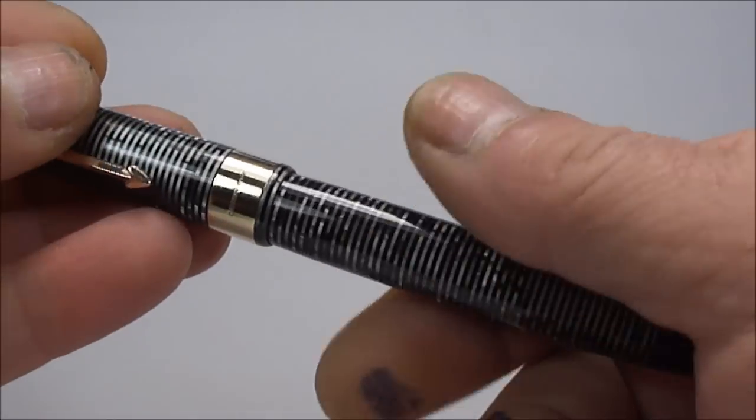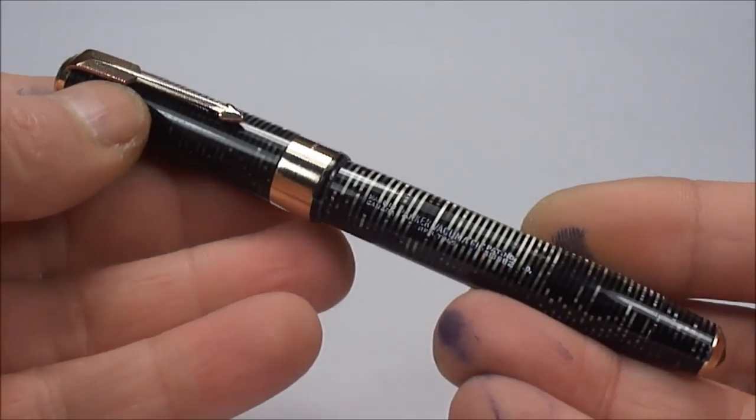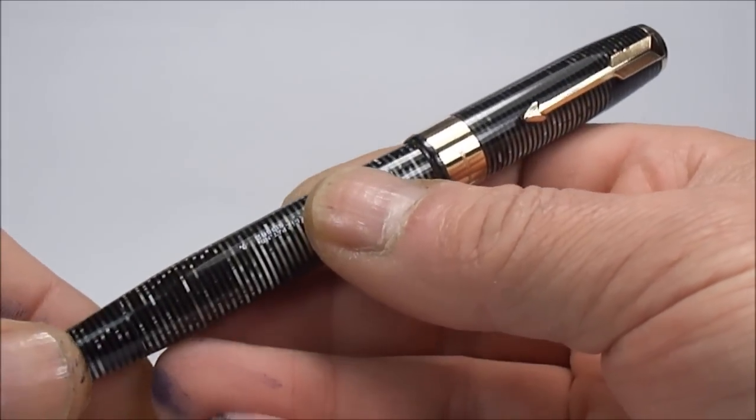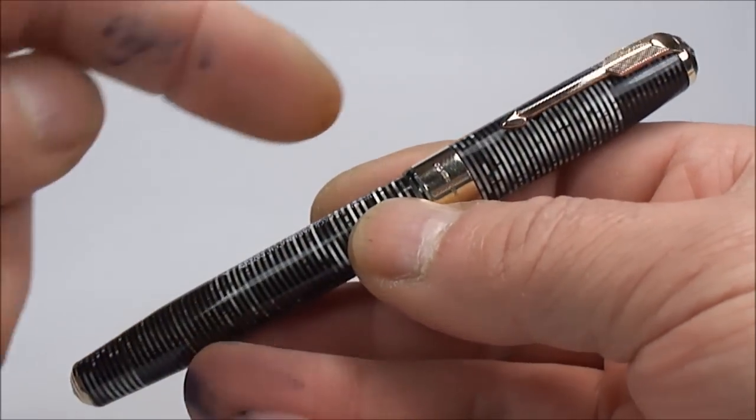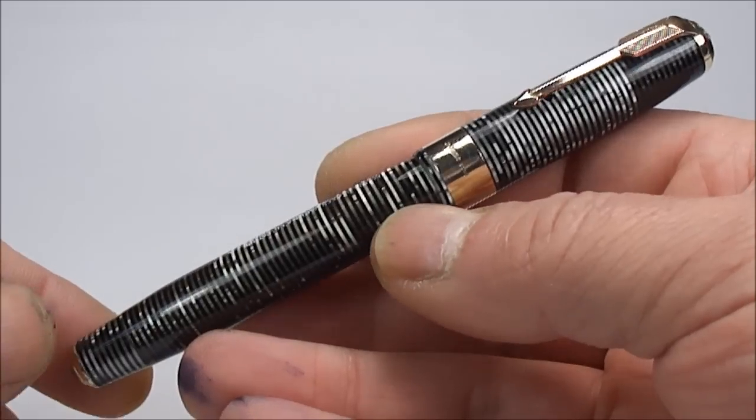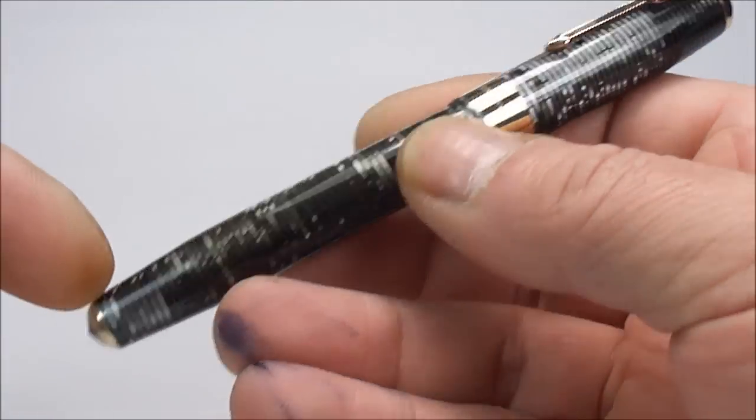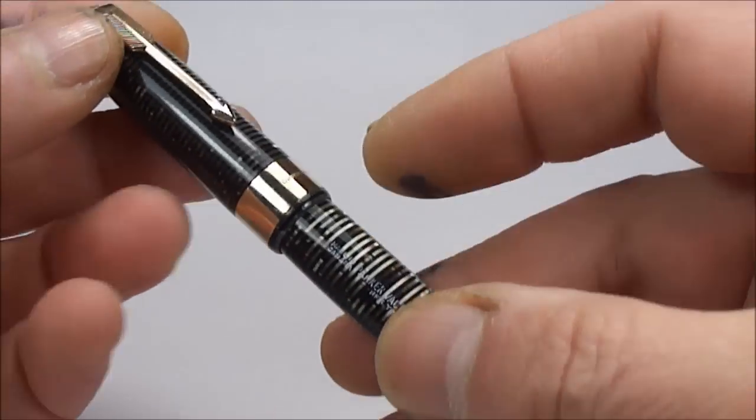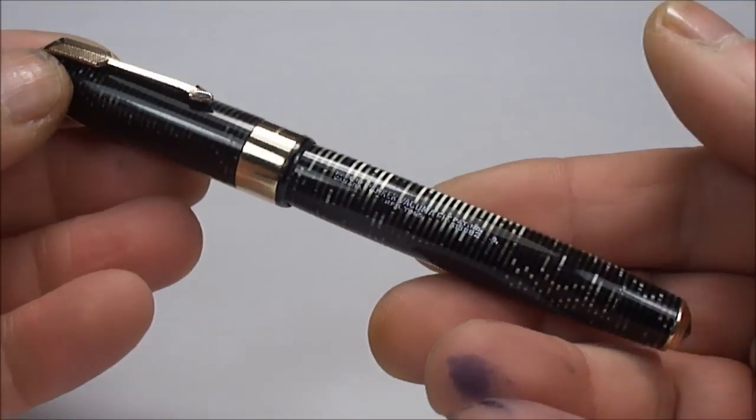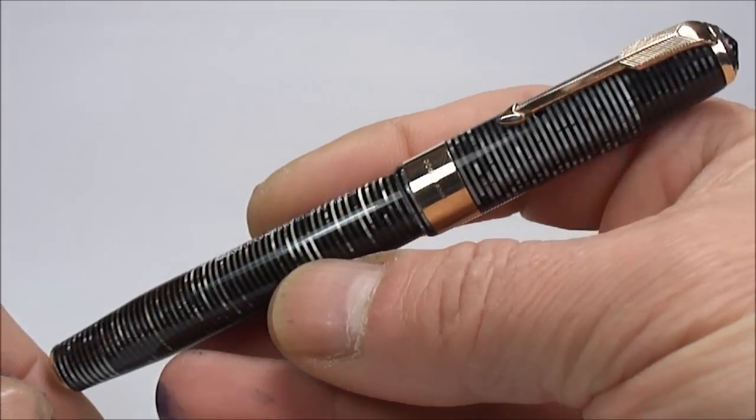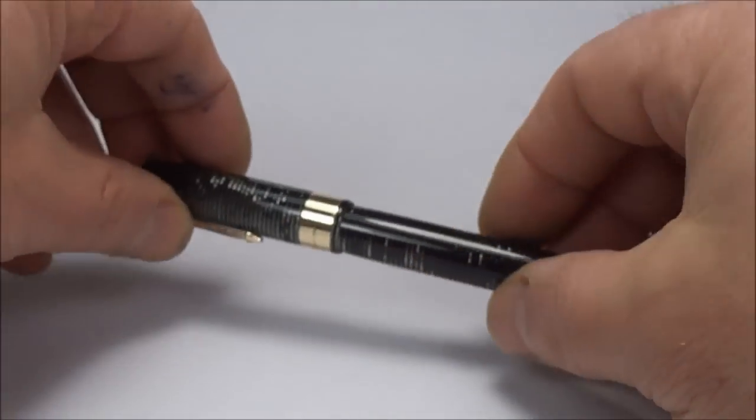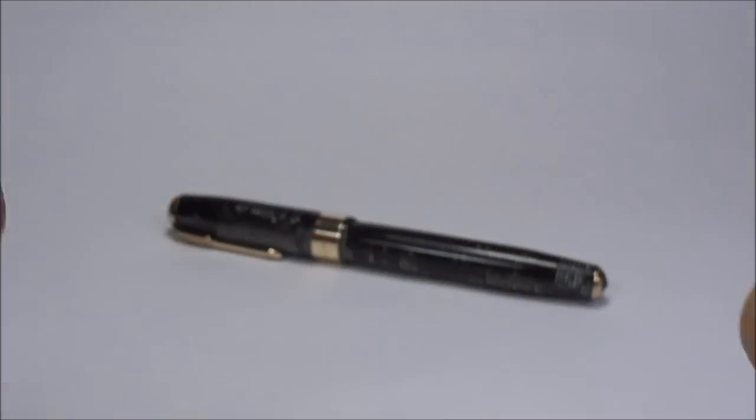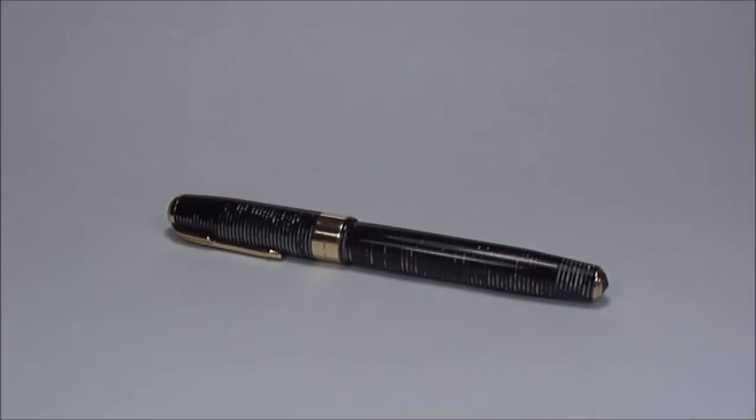Let's put the cap back on. So, there we have it. That's the Parker Vacuumatics. Again, I believe there was different generations in these particular pens. They termed it as the first, second and third generation pens. I believe this particular one is a first generation, as we said earlier, twin jewelled in this silver pearl. And as we've shown you, with this very sought after jewellers band to the cap. All in all though, an absolutely beautiful pen. So, there we have it. The Parker Vacuumatic jewellers band.